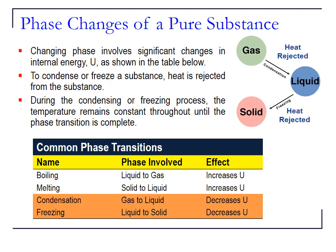In the other direction, gas can be condensed to liquid — heat is rejected during this process. Similarly, liquid can be frozen to solid, during which heat is also rejected. We call these the condensing and freezing processes. During these processes, the internal energy of the system decreases.